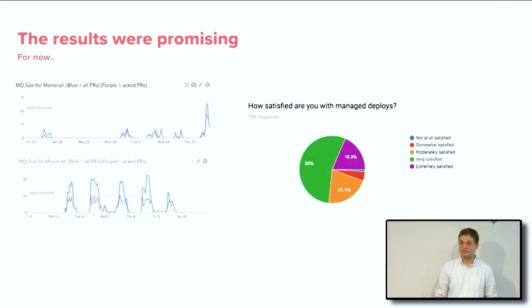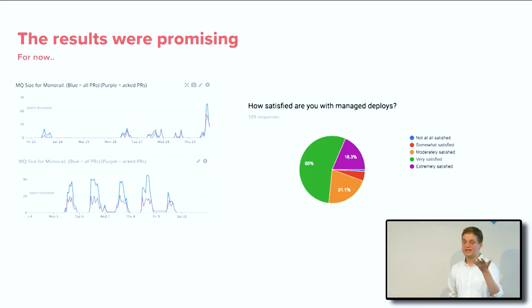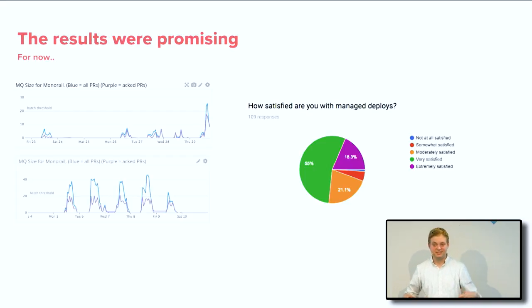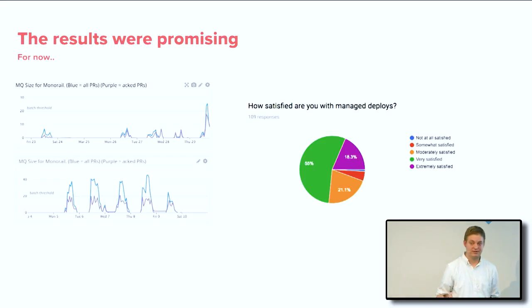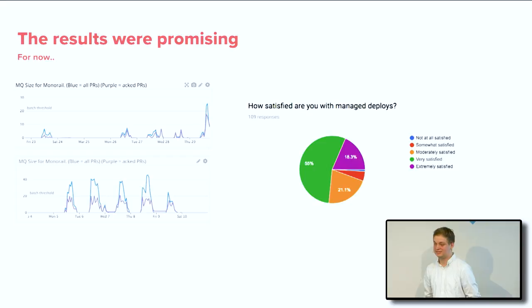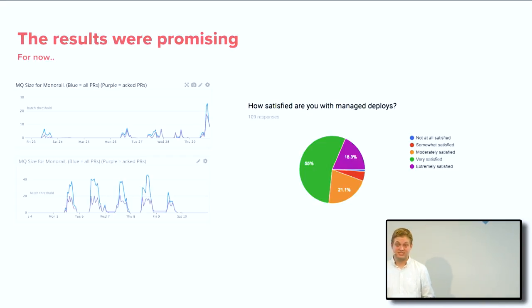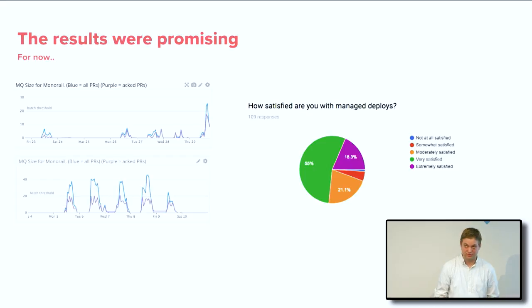The results were promising. The merge queue used to go up to 40 and now it never goes above that anymore. We asked developers how they were feeling, and it was a dramatic shift. Even though people loved democratic deploys in theory, it just didn't work for MonoRail. People are much happier now. But obviously we've been doing other things in the background to deal with the MonoRail problem.